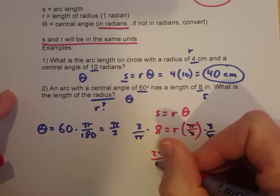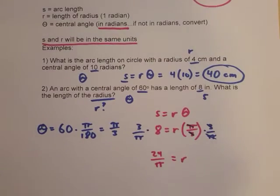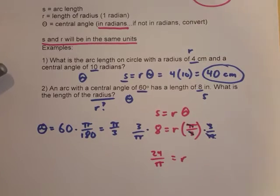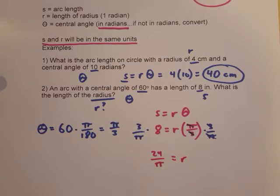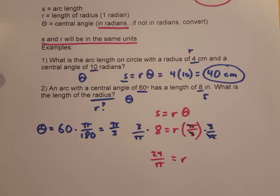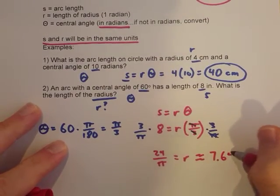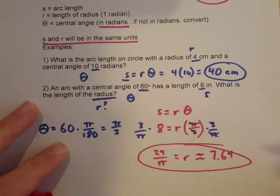So 24 over pi. And if you want to get the approximate answer for that, you can. Maybe that's a good idea in this case. Let me just get that real quick. 24 divided by pi is going to be about 7.64 approximately.